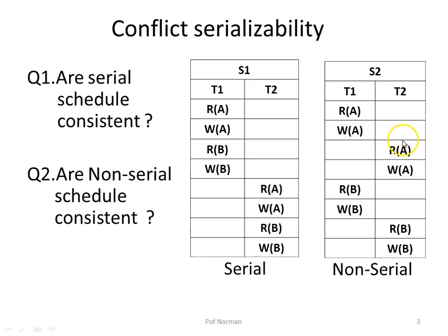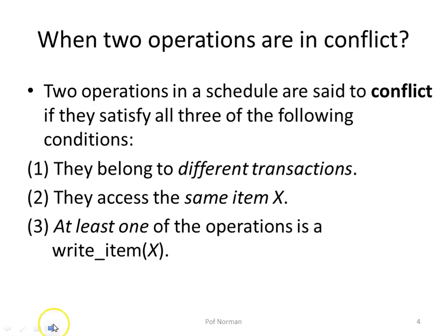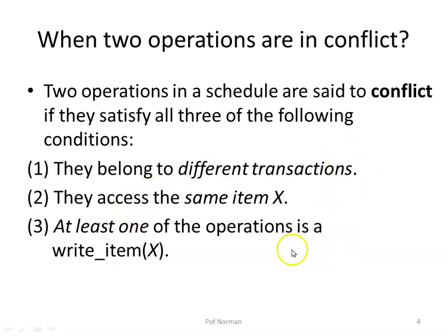To find whether there is a conflict in a non-serial schedule, we follow certain conditions. Two operations in a schedule are said to conflict if they satisfy all three conditions: first, the operations must belong to two different transactions; second, they access the same data item X; and third, at least one of the two operations must be a write operation. If all three conditions are satisfied, the two operations are conflicting.